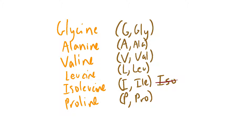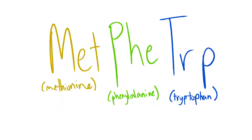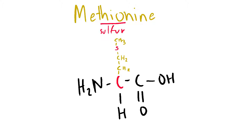There are three more hydrophobic amino acids, which can be remembered as MetPheTrp: Methionine, Phenylalanine, and Tryptophan. Methionine has 'thio' in it, which is a prefix used to denote sulfur, so it has sulfur in it like this. The single letter abbreviation is just M.